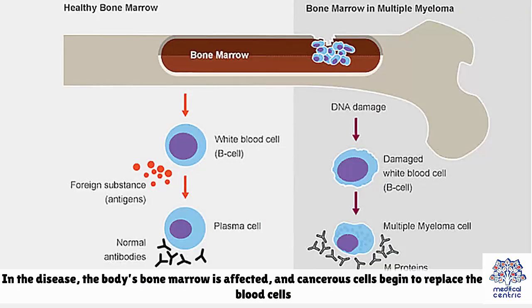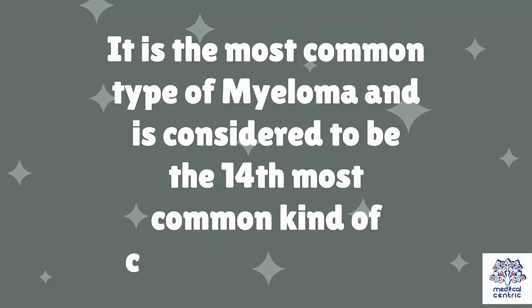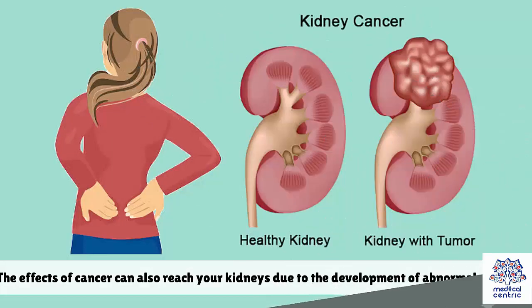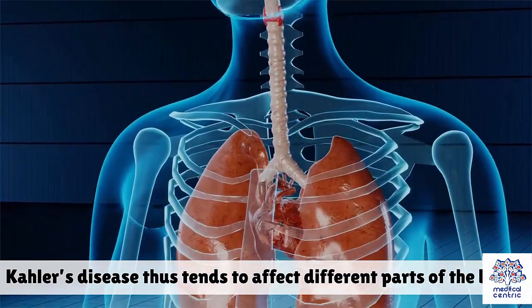In the disease, the body's bone marrow is affected and cancerous cells begin to replace the healthy blood cells. It is the most common type of myeloma and is considered to be the 14th most common kind of cancer in the world. The effects of cancer can also reach your kidneys, due to the development of abnormal proteins. Kahler's disease thus tends to affect different parts of the body.